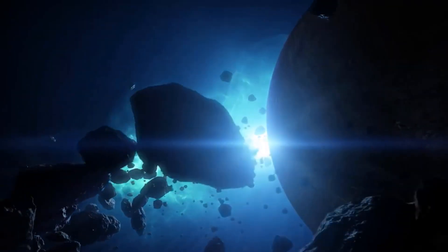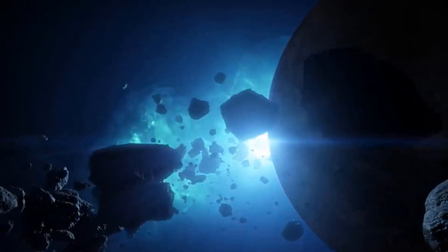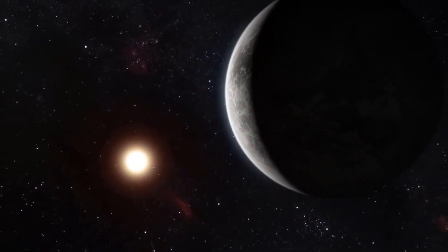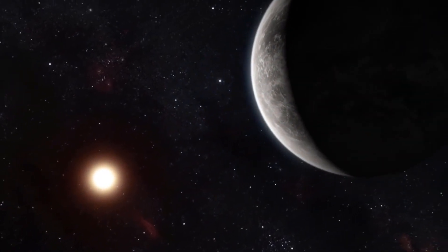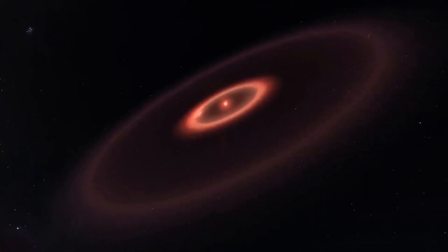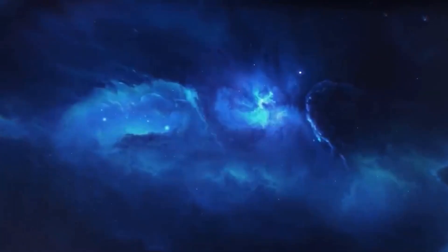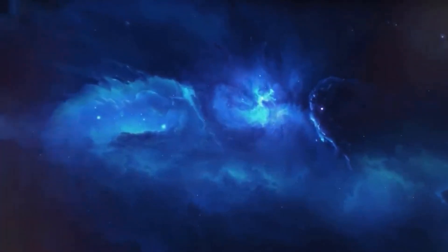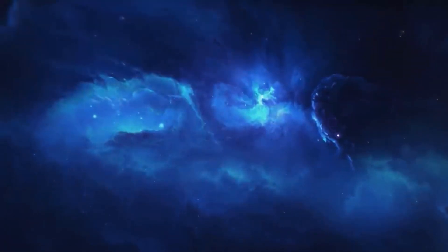The primary stars in this system are Alpha Centauri A and Alpha Centauri B. Both of them are about 4.37 light years from Earth, but there's also a third star called Proxima Centauri, or sometimes called Alpha Centauri C. This star is even closer to the Earth than the other two, as it sits at just 4.24 light years away.